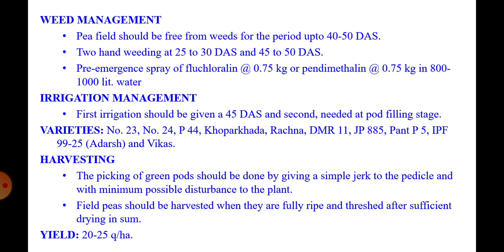Irrigation management: 1 to 2 irrigations give higher yield. First irrigation should be given 45 days after sowing, and the second should be given at pod filling stage, which will help enhance the yield.